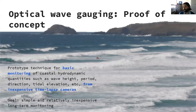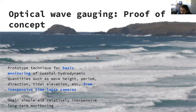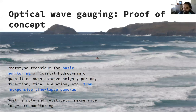What I'm going to be talking about today is a proof-of-concept technique I've developed with my collaborators over the last year or so that I'm calling optical wave gauging. It's a prototype technique for basic monitoring of coastal hydrodynamics. So far it's been tested on wave height and period, which is what I'll be showing you today. I've done some preliminary work with wave direction and tide, which seems promising, but I won't show that today. All of this comes from relatively inexpensive time-lapse cameras.